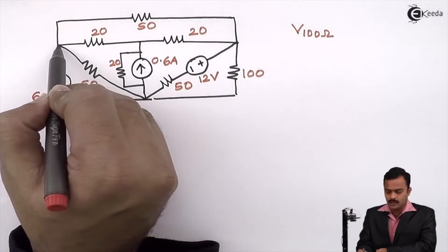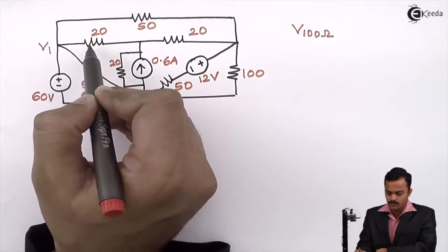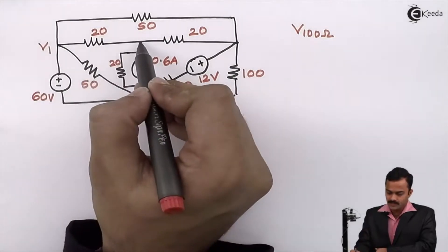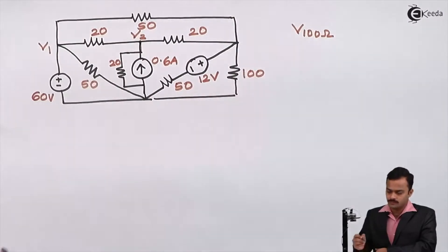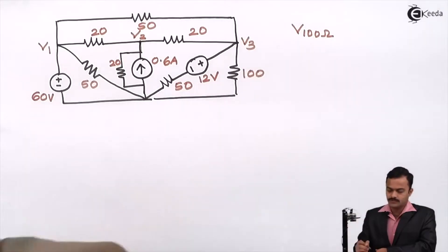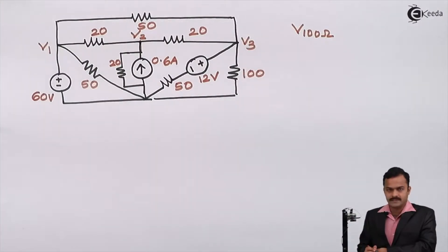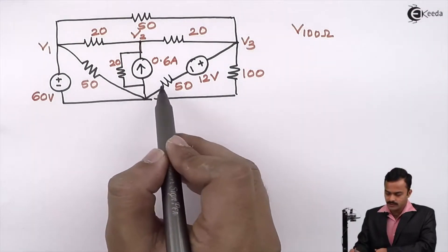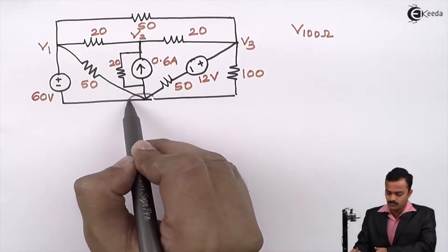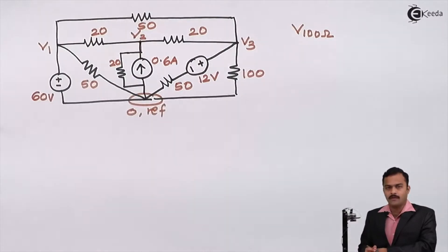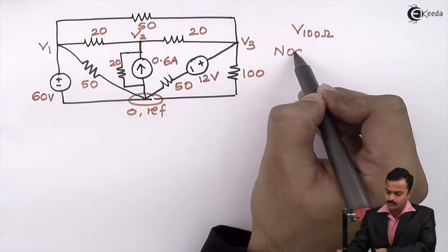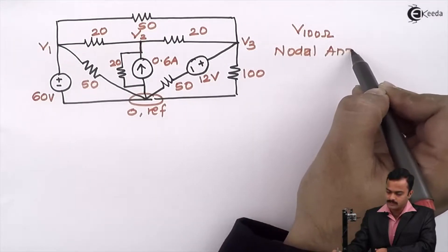I will consider this as node one, V1, because four branches are connected here. This is node two, V2 is the potential of node two. And third node is V3. Here six branches are connected, so better I take this as a reference node having a voltage zero. In this problem it is better if I choose nodal analysis. Let's solve the problem by nodal analysis only.